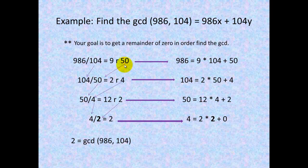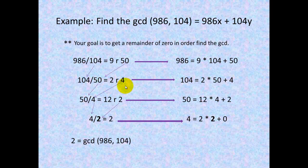Here we take our remainder and make it the divisor, and make our previous divisor the dividend. So we have 104 divided by 50 equals 2 with a remainder of 4. We rewrite that equation as 104 equals 2 times 50 plus 4.